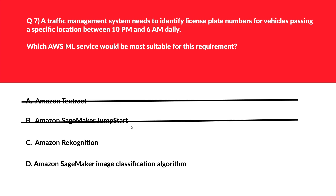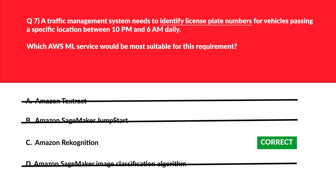Option C is Amazon Rekognition — Rekognition is especially designed to analyze images and videos, making it ideal for detecting and reading license number plates. Let's park this. Option D says Amazon SageMaker image classification algorithm — while SageMaker's image classification algorithm can classify images, it isn't designed for reading number plates on vehicles. We are left with option C — Amazon Rekognition — and it is the correct answer.